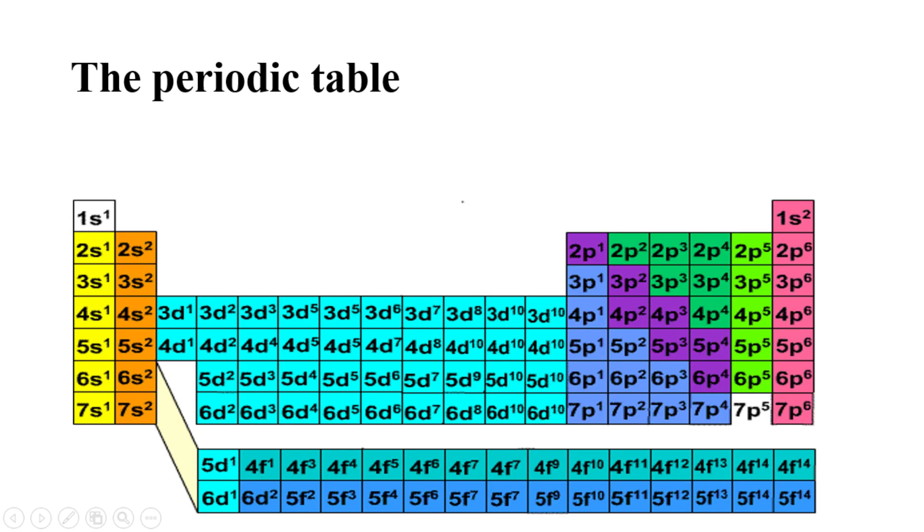Since the arrangement of the periodic table is based on the electron configurations, this figure provides an alternative method for determining the electron configuration. The filling order simply begins at hydrogen, which has only one electron on the 1s orbital. Then the following atom will have one electron more, and so on.